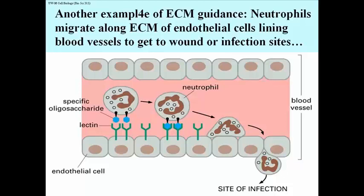And eventually, after several other events, the neutrophils can insert themselves and squeeze between endothelial cells, leaving the blood vessel and going to the site of infection where they can phagocytose or endocytose debris, bacteria, or whatever they have to remove from the wound site or site of infection.